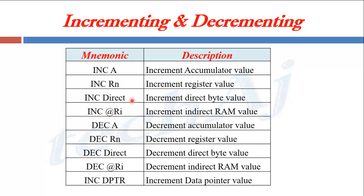INC direct, where direct is a RAM memory address — this instruction will increment the value present at that direct memory address. Similarly, INC @Ri, where @Ri indirectly points to the memory address, so this instruction will increment the value present at the memory pointed to by this indirect address pointer.